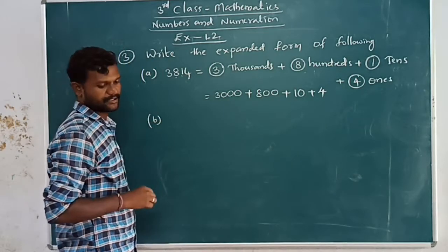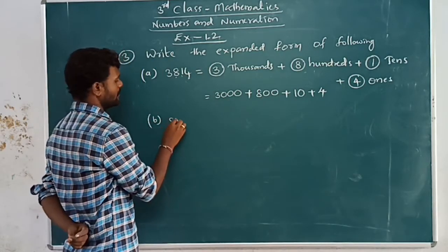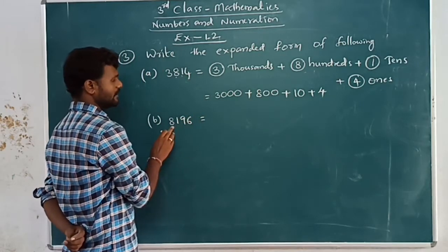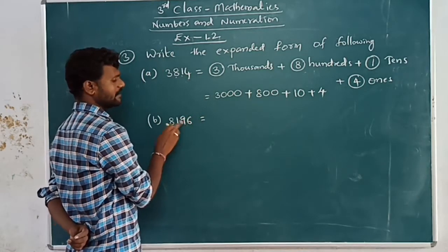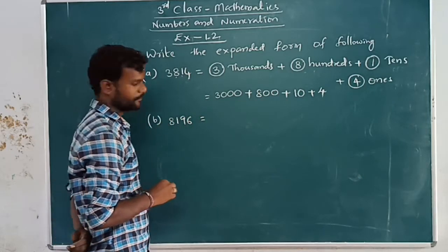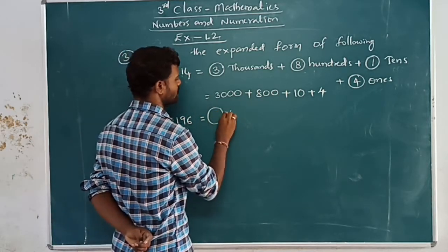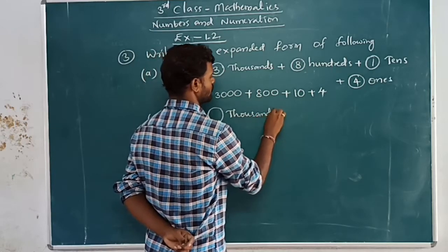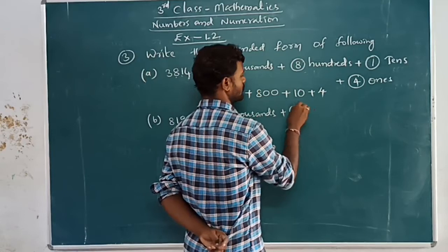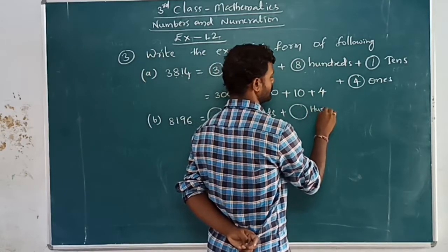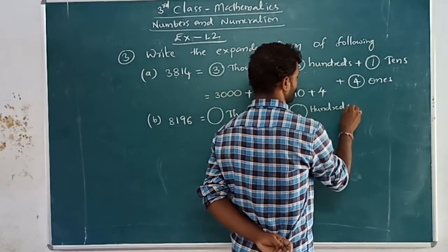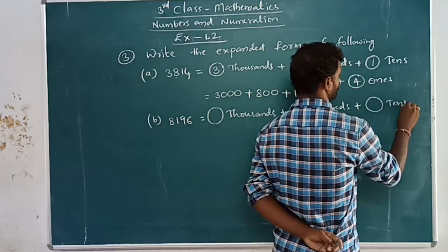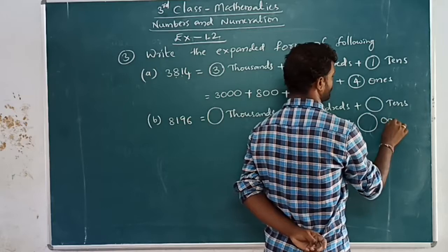Second, problem B is given: 8196 — eight thousand one hundred and ninety-six. First we have to write how many thousands, hundreds, tens, and ones. Thousands plus hundreds plus tens plus ones.